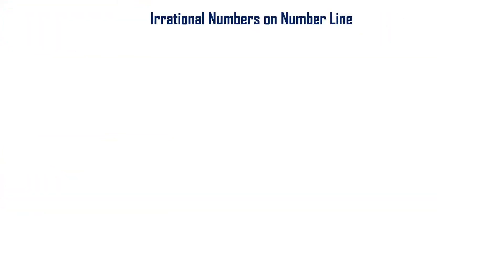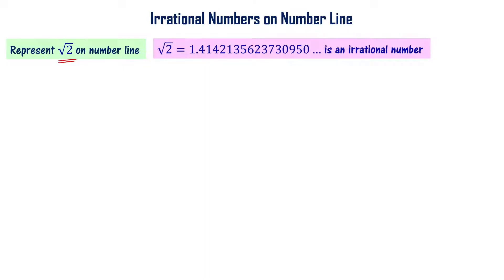Now let's look at irrational numbers — how to represent irrational numbers on the number line. Let's represent √2 on the number line. √2 is an irrational number because we cannot express it as a ratio of two integers. Its decimal expansion is 1.414... and so on — it is a non-terminating, non-recurring decimal. That is why √2 is called an irrational number.